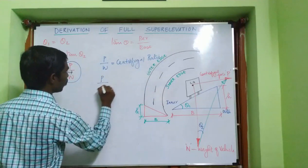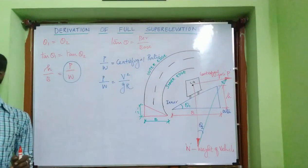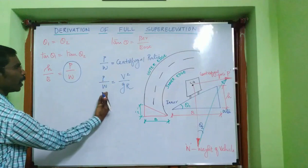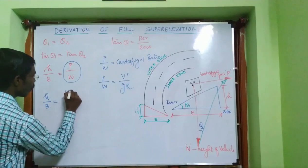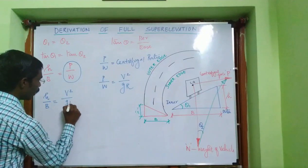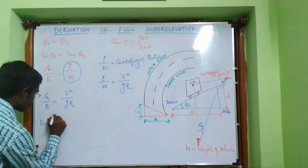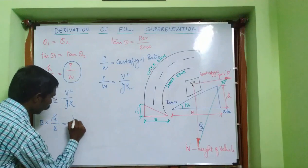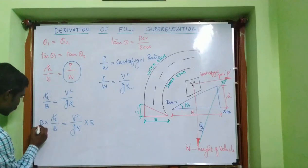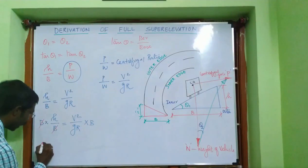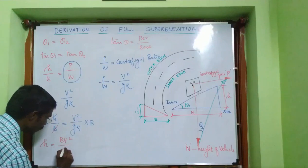The centrifugal ratio P/W equals v squared divided by g times r, which we have studied previously. Substituting P/W into the equation gives h divided by b equals v squared divided by g r. Multiplying both sides by b, the b terms cancel, giving the simplified formula: h equals b times v squared divided by g r.